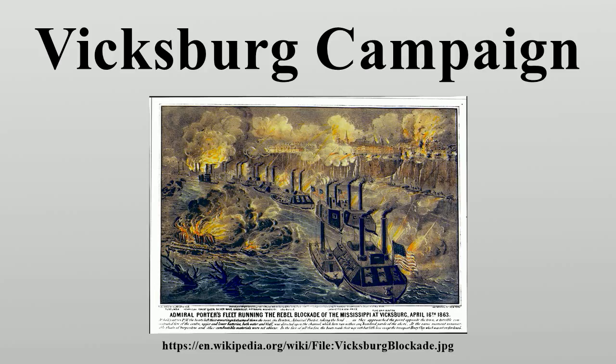Confederate: Lt. Gen. John C. Pemberton's Confederate Army of Mississippi, approximately 30,000 men, consisted of five divisions under Maj. Gen. William W. Loring, Carter L. Stevenson, John H. Forney, Martin L. Smith, and John S. Bowen. General Joseph E. Johnston's forces in Raymond and Jackson, Mississippi, about 6,000 men, were elements of his Department of the West, including the brigades of Brig. Gen. John Gregg, Payton H. Colquitt, and Brig. Gen. William H. T. Walker.